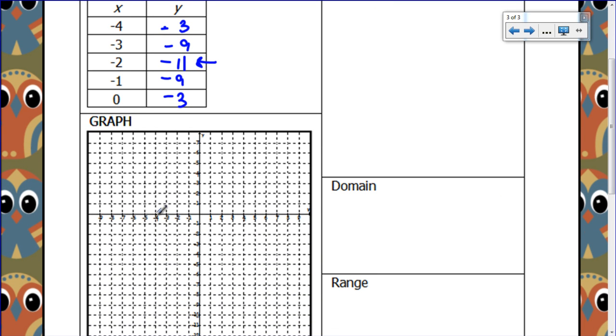Let's plot those points and make a graph. I have negative 4, negative 3. Negative 3, negative 9. Negative 2, negative 11. Here's your parabola, skinny little parabola. There's my vertex down there at negative 2, negative 11.